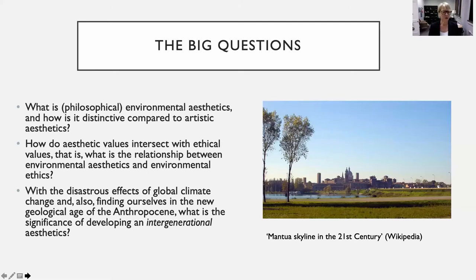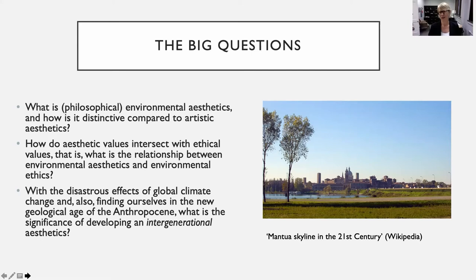The second question I'm going to look at is how aesthetic values interact with ethical values — what is the relationship between environmental aesthetics and environmental ethics. Thirdly, in the context of the disastrous effects of global climate change and finding ourselves in the declared geological age of the Anthropocene, what is the significance of developing intergenerational thinking within environmental aesthetics? I think the climate emergency is something that all aesthetic philosophers should be looking at, not just those working in environmental aesthetics.